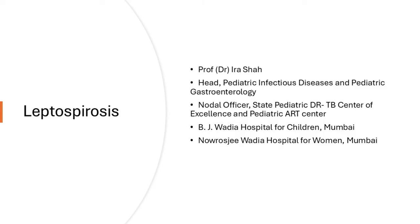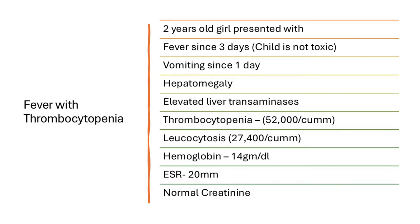For example, a two-year-old girl presented with fever for three days, vomiting for a day, and hepatomegaly. She had elevated liver transaminases, thrombocytopenia, leukocytosis, hemoglobin of 14 — which is pretty high for a two-year-old girl — an ESR of 20, and a normal creatinine. When you have this kind of a child presenting with fever and thrombocytopenia during the monsoons, there are a lot of differentials to consider.